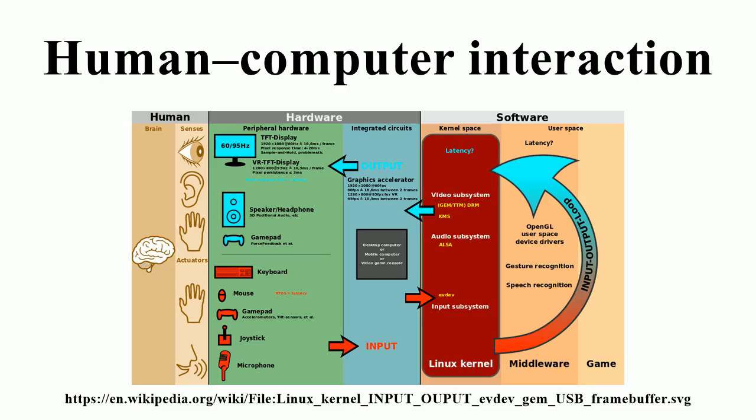Perceptual Principles: 1. Make displays legible. A display's legibility is critical and necessary for designing a usable display. If the characters or objects being displayed cannot be discernible, then the operator cannot effectively make use of them. 2. Avoid absolute judgment limits. Do not ask the user to determine the level of a variable on the basis of a single sensory variable. These sensory variables can contain many possible levels. 3. Top-down processing. Signals are likely perceived and interpreted in accordance with what is expected based on a user's experience. If a signal is presented contrary to the user's expectation, more physical evidence of that signal may need to be presented to assure that it is understood correctly.